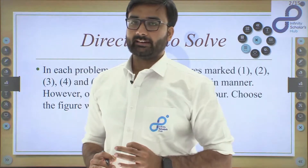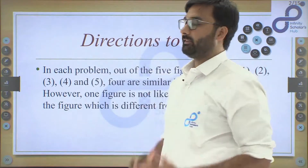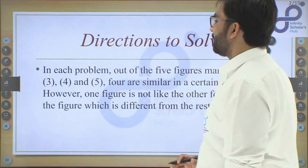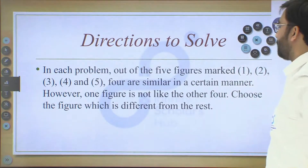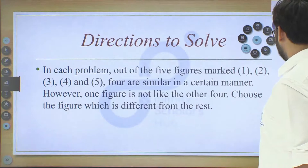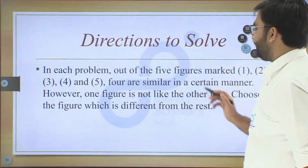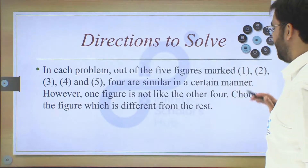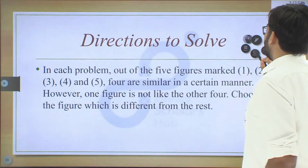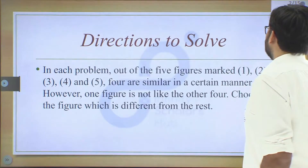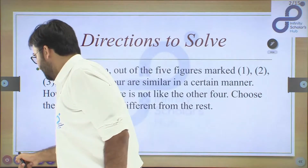Before starting with the questions directly, we will understand what is told to us while solving this type of question. The question reads: in each problem, out of five figures marked 1, 2, 3, 4, 5, four are similar in a certain manner; however, one figure is not like the other four — choose the figure which is different from the rest. Whenever such a question is given, it belongs to the topic of classification.